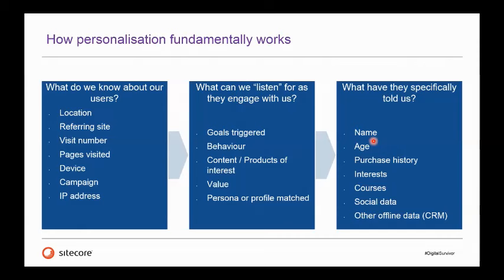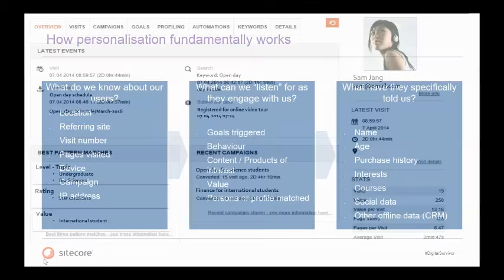You combine explicit information they've given you with implicit behavioral data, and you end up with a single view of the student — which was previously difficult to achieve because of digital fragmentation. And you need to integrate all the offline data with the online data to get that single picture of the student. Without it, you can't provide them with the right information.